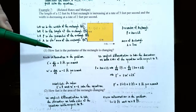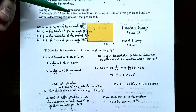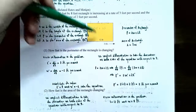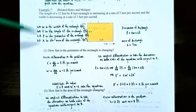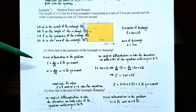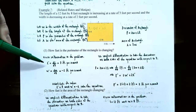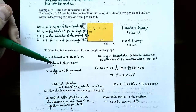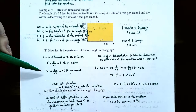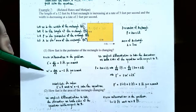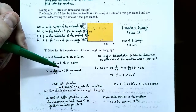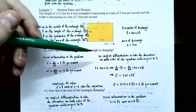Part 1: how fast is the perimeter of the rectangle changing? The given information is that L prime equals positive 3 feet per second because the length is increasing, and W prime equals negative 2 feet per second because the width is decreasing. Now we're ready to use implicit differentiation to differentiate the perimeter equation with respect to time T.